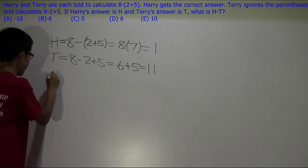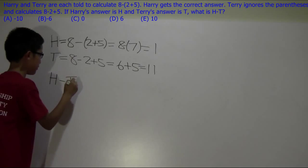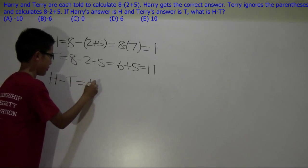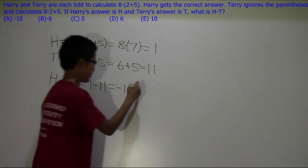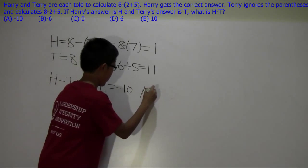Now subtracting h minus t to get our final answer. So our final answer is 1 minus 11 equals negative 10. So our answer is a, negative 10.